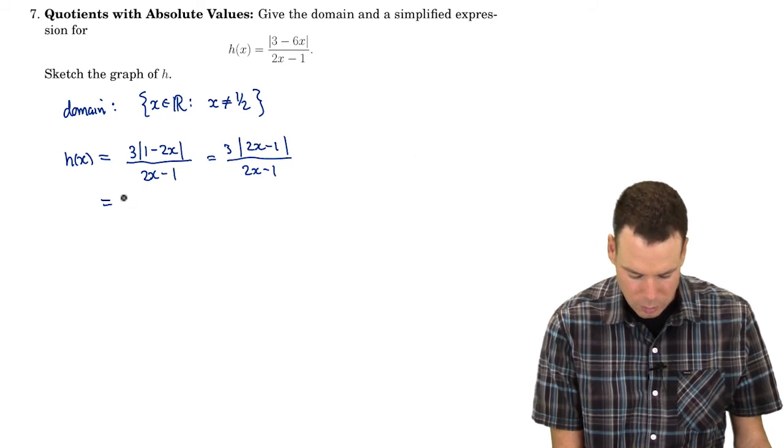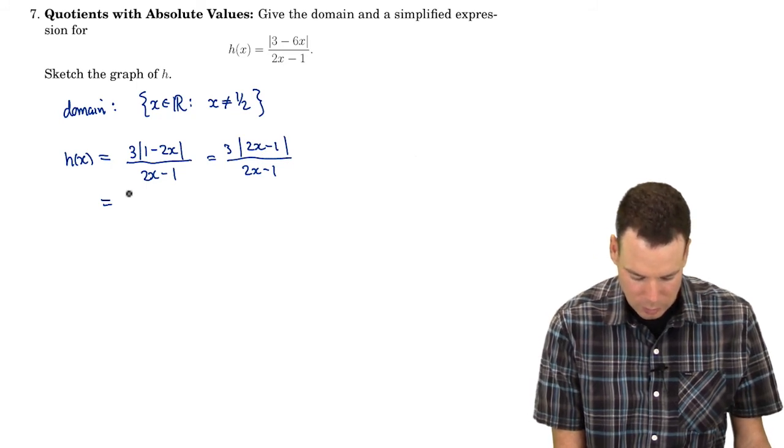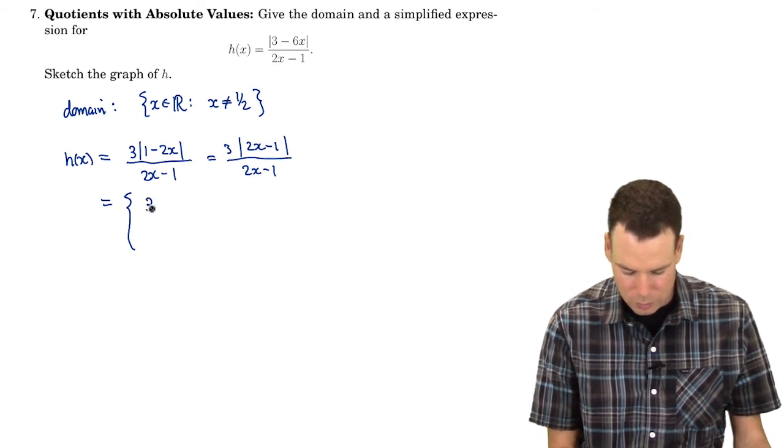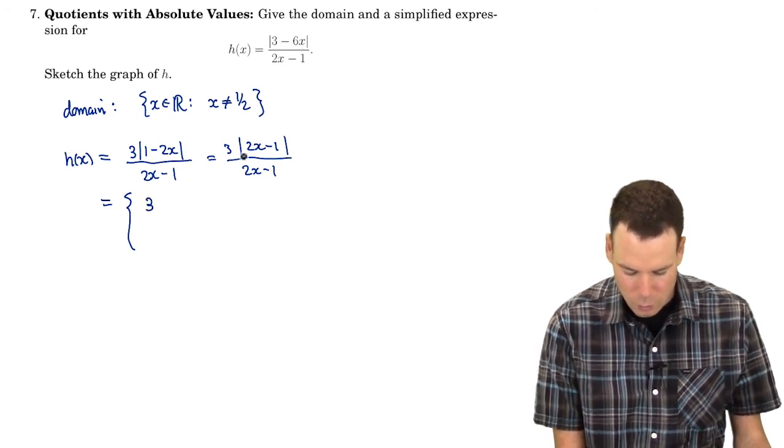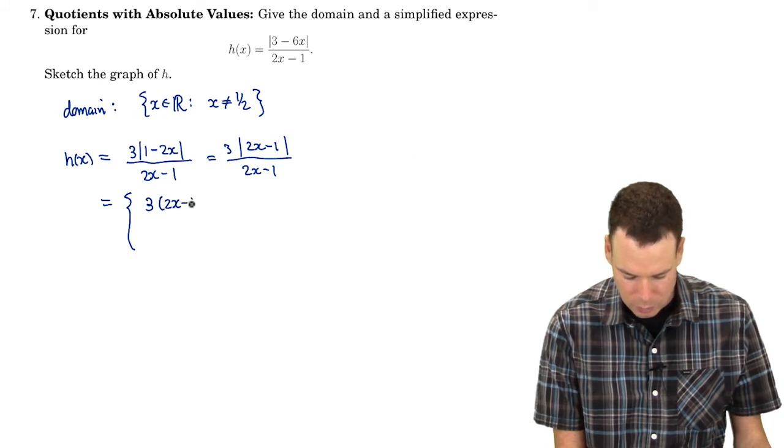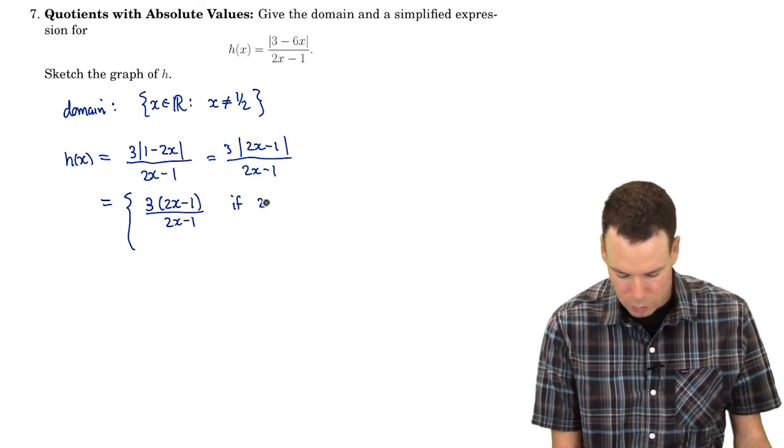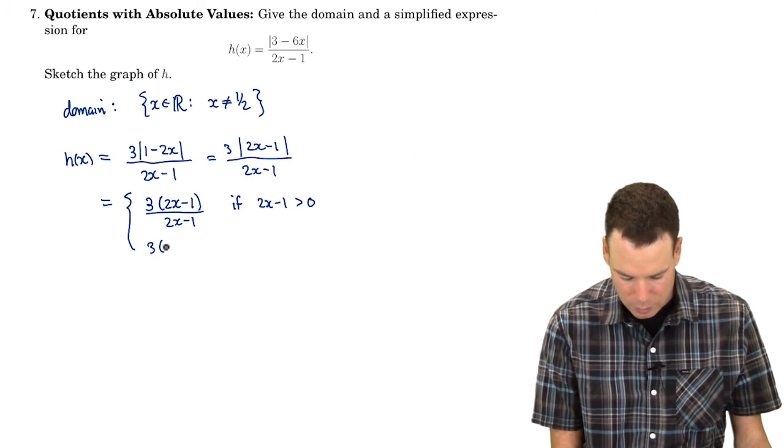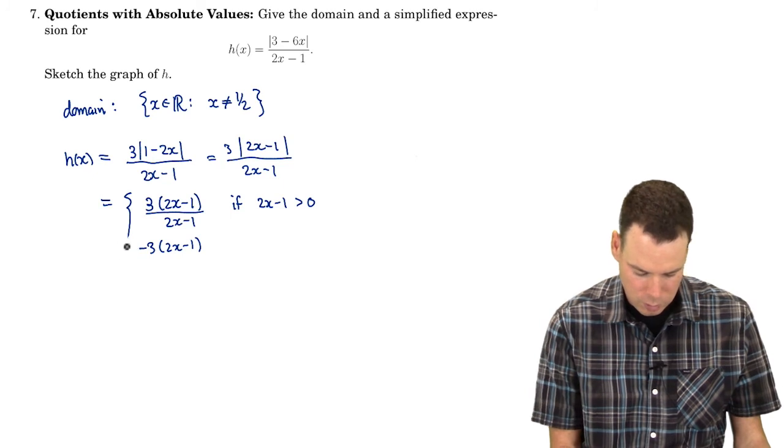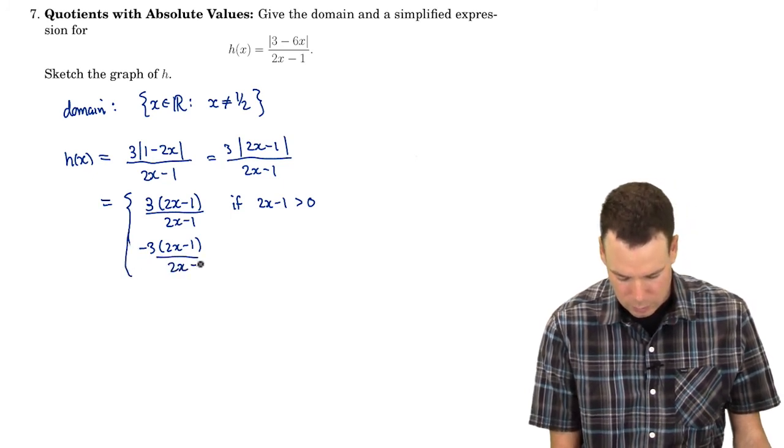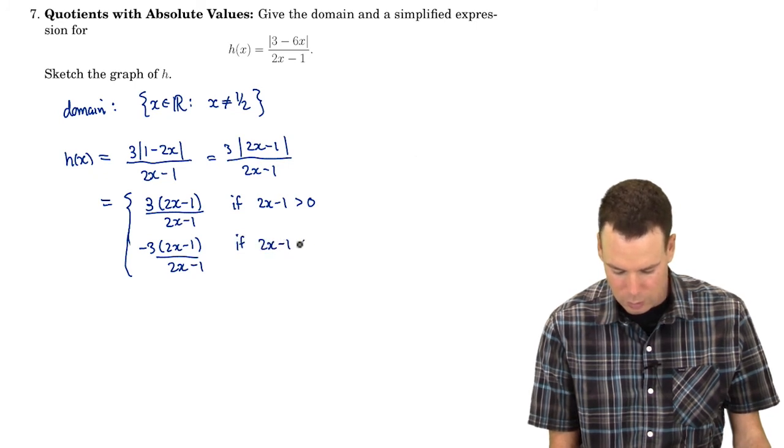So I need to figure out how to get rid of the absolute value sign and the way I do that is I look at absolute value as a piecewise defined function and I say okay when 2x minus 1 is positive I can remove the absolute value signs with no issues whatsoever. So that's if 2x minus 1 is positive but if 2x minus 1 is negative I remove the absolute value sign at the cost of having an extra minus sign. So that's if 2x minus 1 is negative.